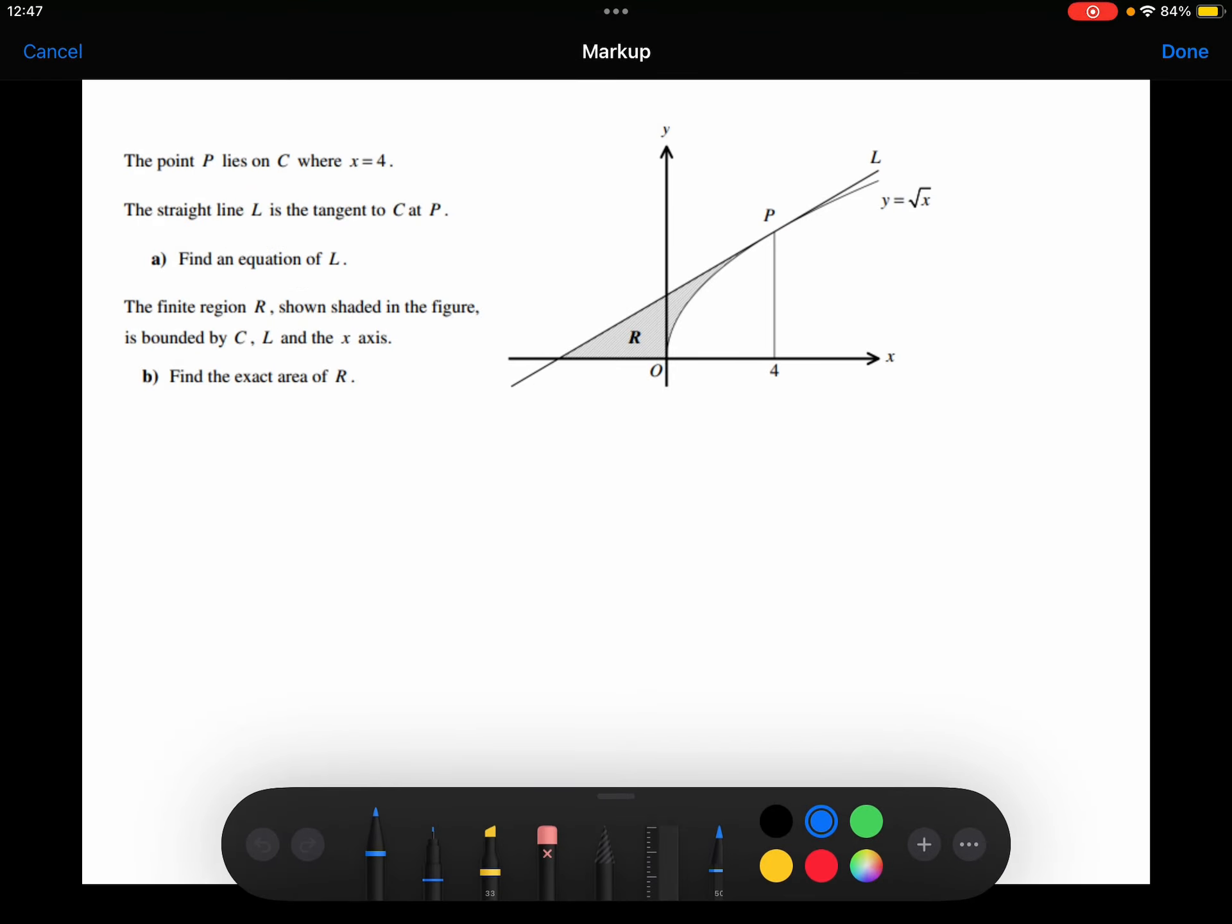We need to work out the exact area of R. So when I'm looking at R, I'm going to consider this triangle. And then I think that if I take away this area here, that's going to leave me with the shaded area R.